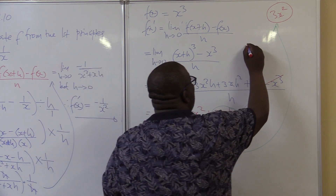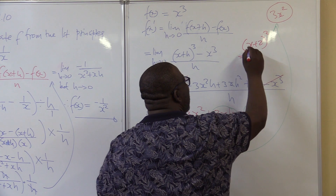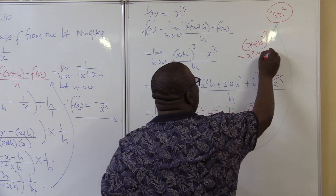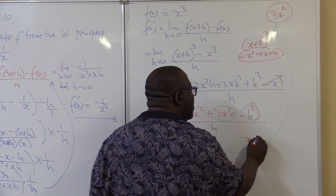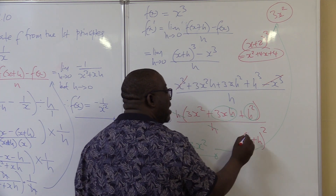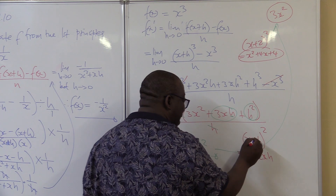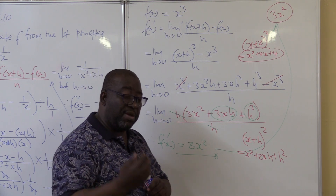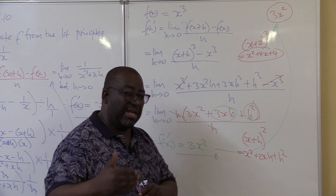When it comes to first principles, practice squaring a binomial too. For example, x plus 2 all squared: x times x is x squared; x times 2 is 2x, doubled gives 4x; 2 times 2 is 4. Similarly, x plus h all squared: x times x is x squared; x times h times 2 is 2xh; h times h is h squared. Step 1: multiply first term by first term. Step 2: multiply first term by second term and double it. Step 3: multiply second term by second term.